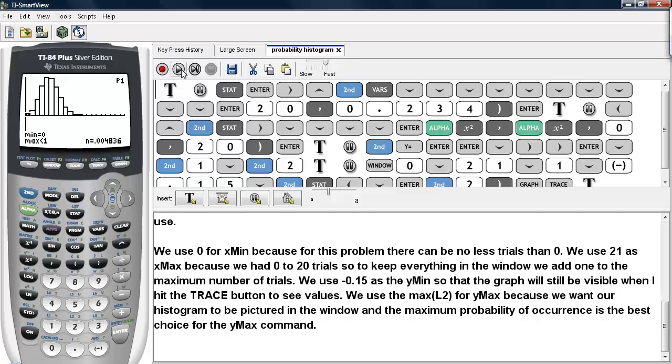And we can hit TRACE to get the values that we want to see. So we use 0 for X MIN because, for this problem, there can be no less trials than 0.